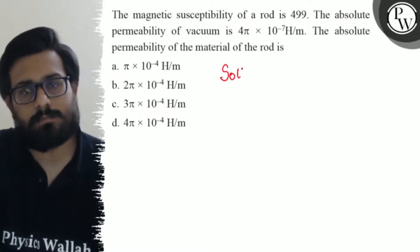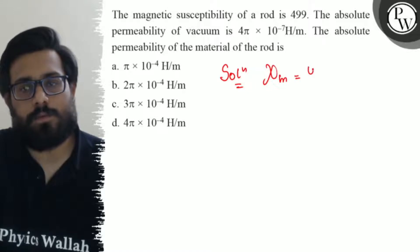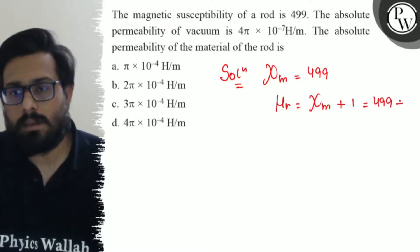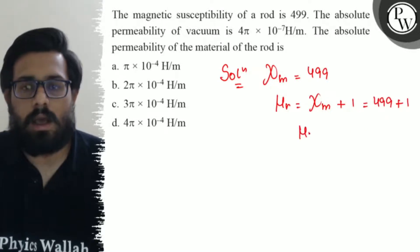Here in this question, the value of magnetic susceptibility is given as 499. So, μr can be written as magnetic susceptibility plus 1. So, 499 plus 1. The value of μr comes out to be 500.